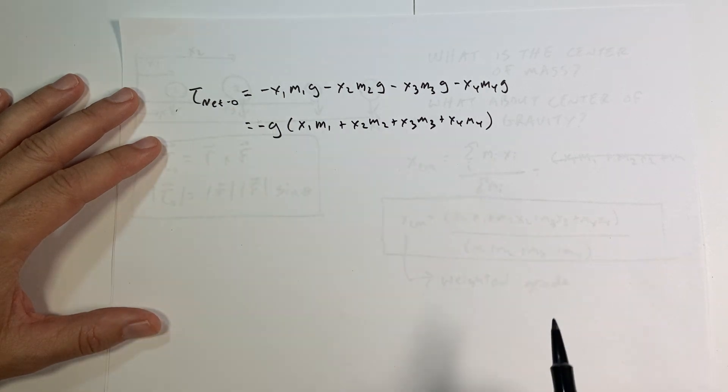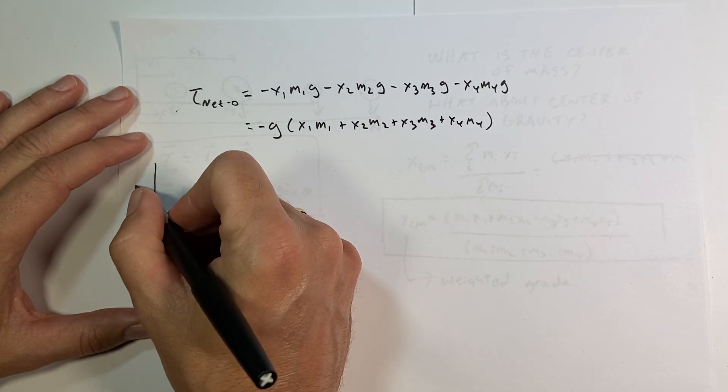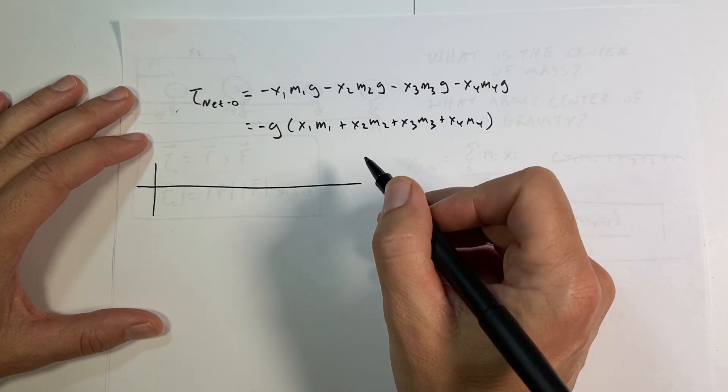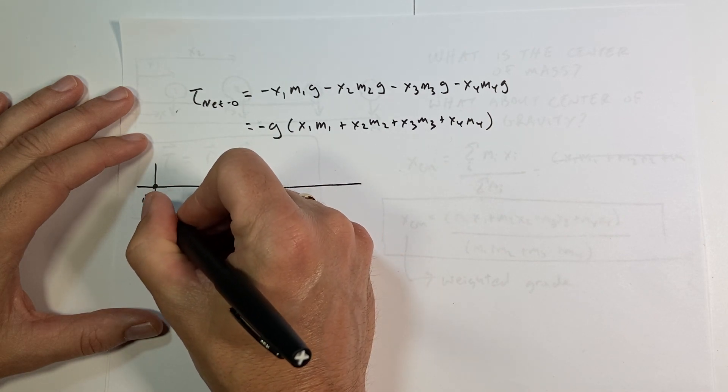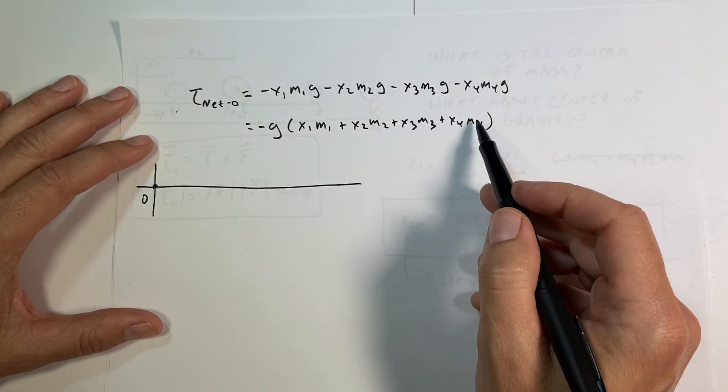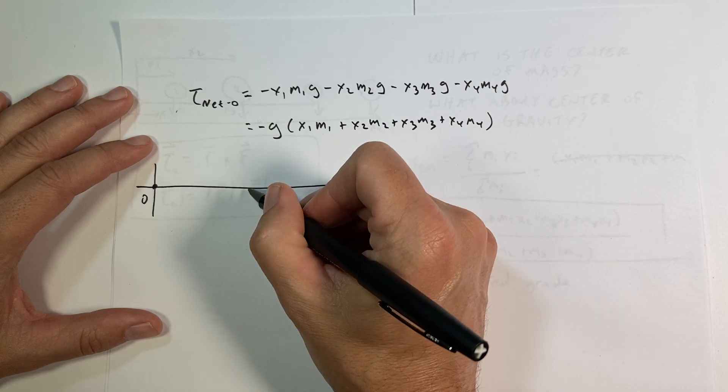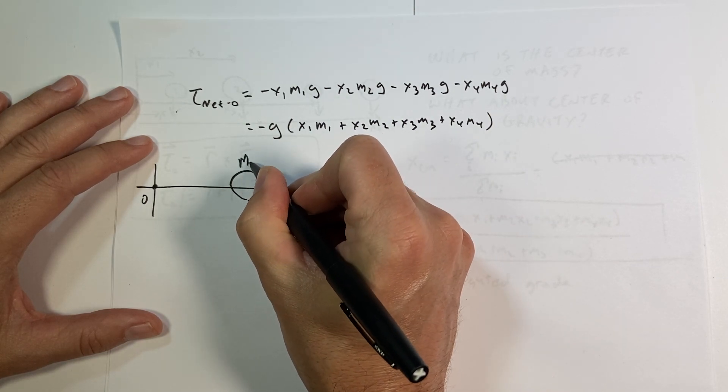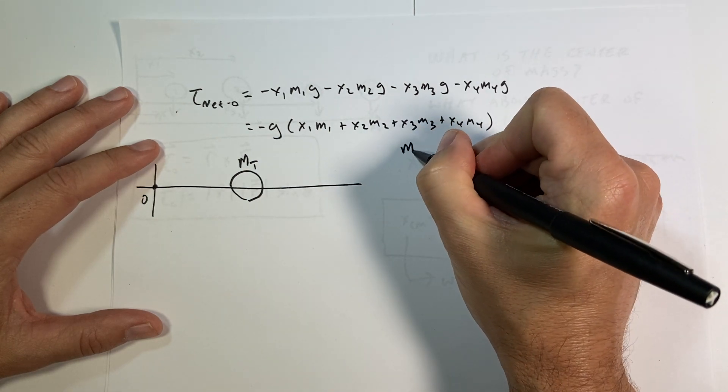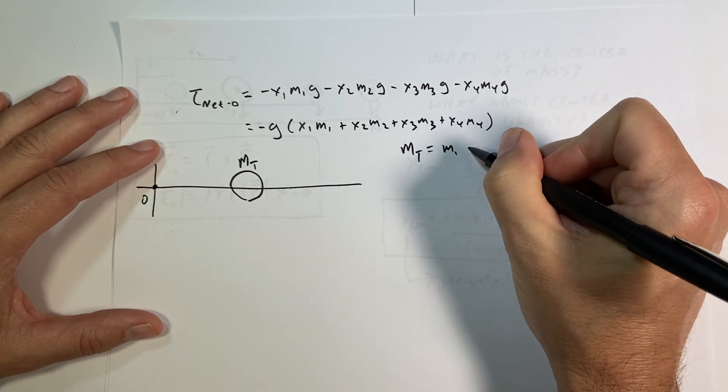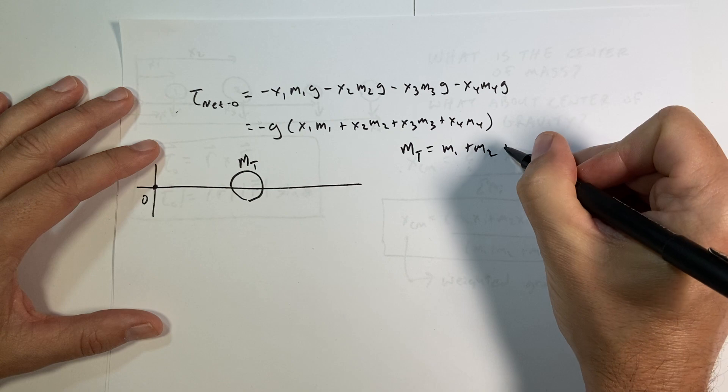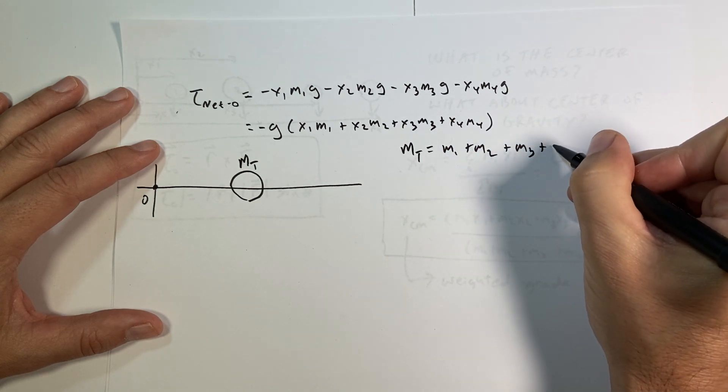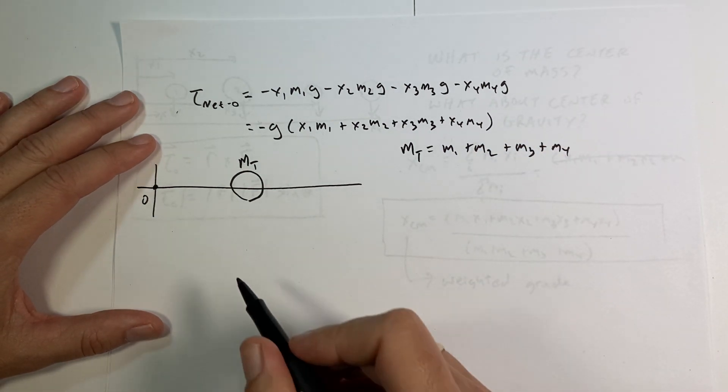Now that's the net torque due to the four individual masses. But now let's say I have my same system right here. And here's that point O. And I want to replace all these masses with just one mass right there. And I'll call it m total, where m total is m1 plus m2 plus m3 plus m4. That's the total mass.